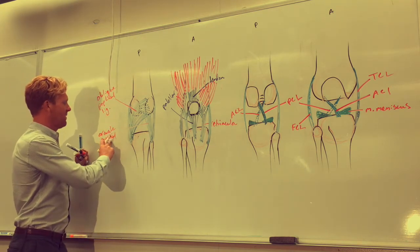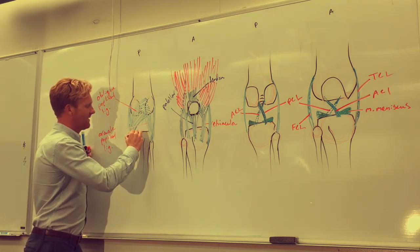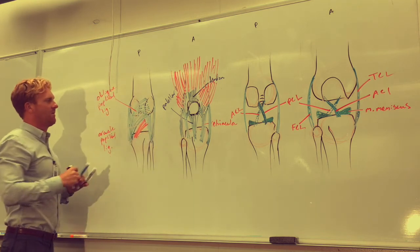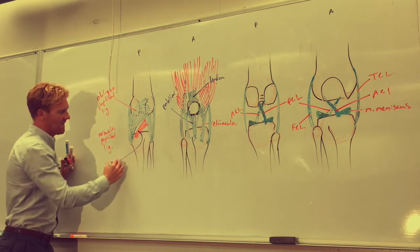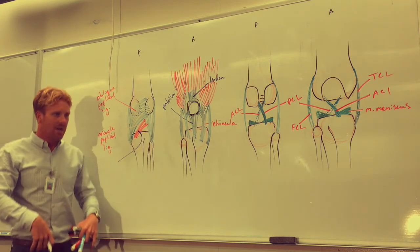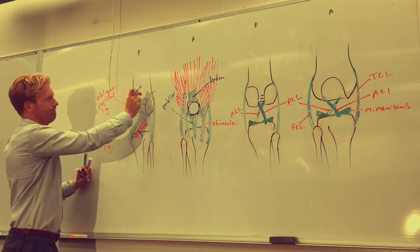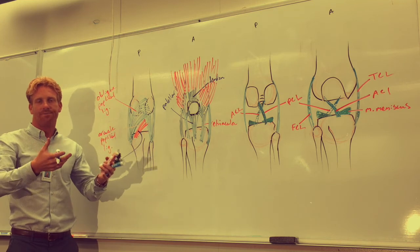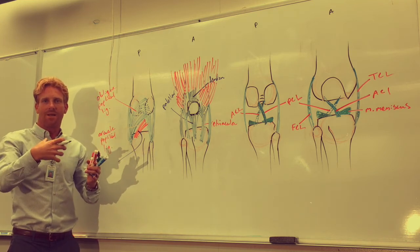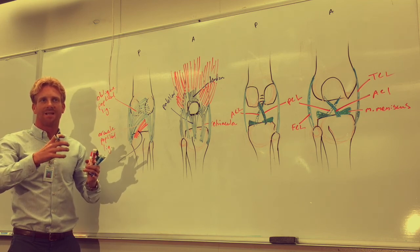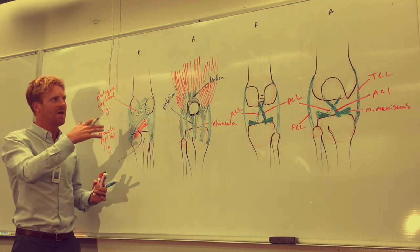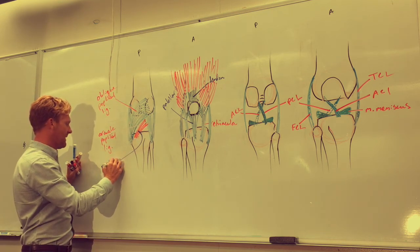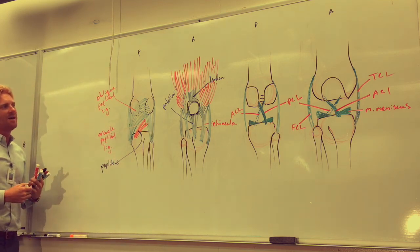Extending underneath the arcuate popliteal ligament is the popliteus muscle, which projects from the tibia. This muscle has a special function: it helps unlock the knee from a locked position. When we fully extend the knee, the lateral condyle stops rolling on the tibial head first, causing the femur to rotate medially. This locks the bones in place by placing tension on the cruciate and collateral ligaments. The popliteus muscle contracts to unlock that tension and allow the knee to flex again.